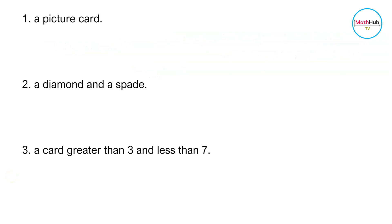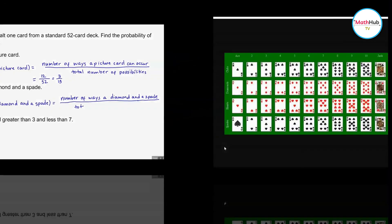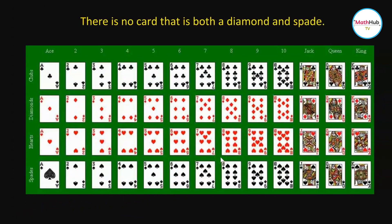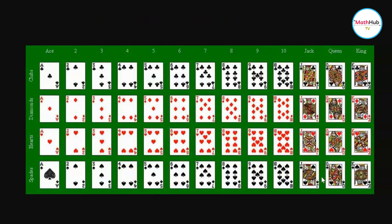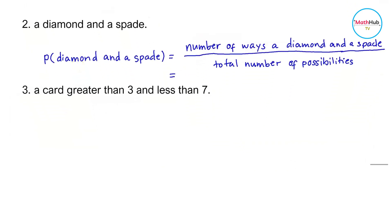Next, find the probability of being dealt a diamond and a spade. This is the number of ways a diamond and a spade can occur divided by the total number of possibilities. Looking at the standard 52 card deck, we cannot find any card that is both a diamond and a spade at the same time. Therefore, the number of ways this can occur is zero, and the probability of being dealt a diamond and a spade is 0 over 52, which equals zero.